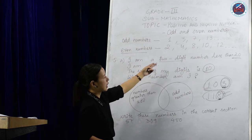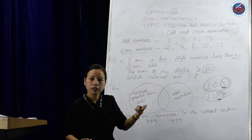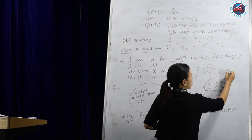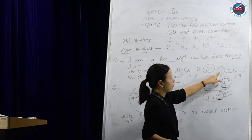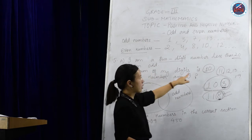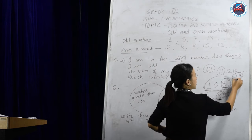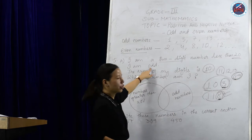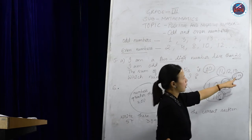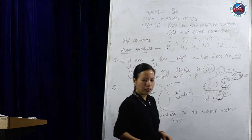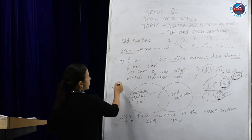Two-digit numbers less than 20 are: 11, 12, 13, 14, 15, and so on up to 19. If I take 11, adding 1 and 1 makes only 2 — not 10. Let's look at 19: 19 is an odd number — correct. It's less than 20 — correct. And the sum of 1 and 9 makes 10 — correct. So the answer is 19.